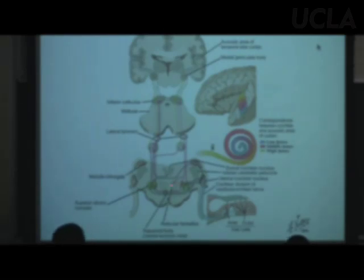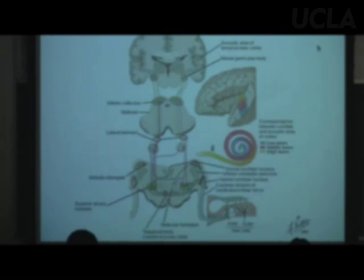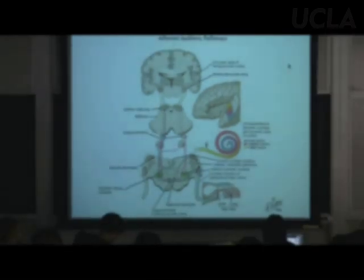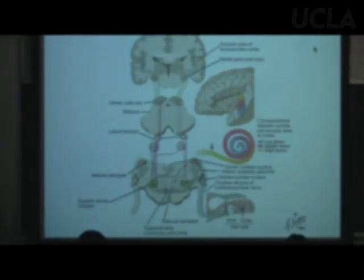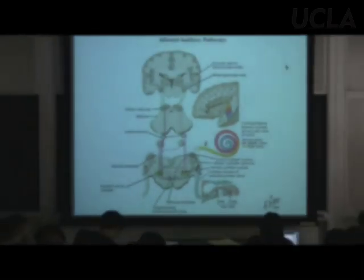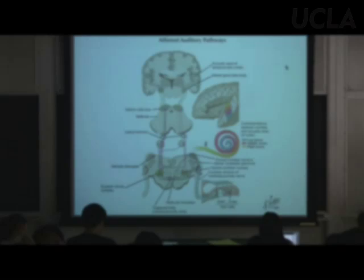The superior olivary complex is something we know a fair bit about from comparative work, lesion work, and electrophysiology. If an animal has a big superior olive, like a cat, it's great at localizing sounds in space. A pigeon, with a really small one, has a very hard time learning sound localization tasks — though it can learn visual discriminations within a day.